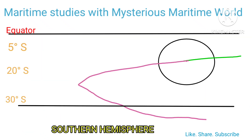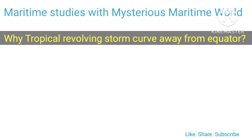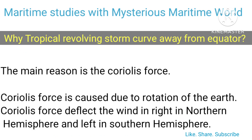In the Southern Hemisphere, a TRS moves in a west-southwest and southwesterly direction, then curves southward and recurves in a southeasterly direction, moving towards the oceanic high situated at around 30 degrees south. After recurving, due to the effect of westerlies, the speed of the TRS increases.